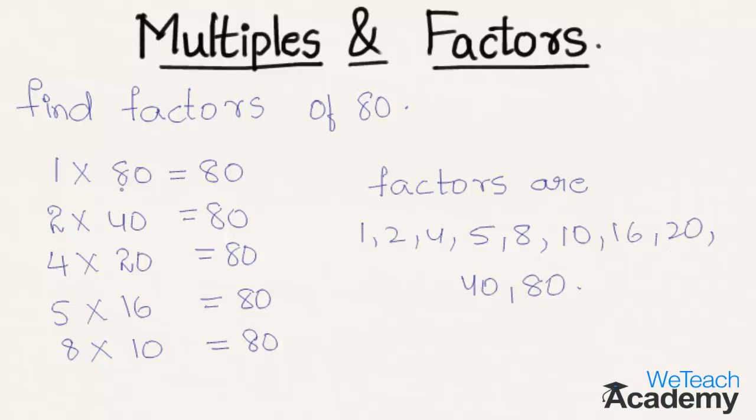We can say that every number is a multiple of 1, and there are infinite number of multiples for every natural number. To find the multiples of a natural number, we have to write the product of that number with all the natural numbers.